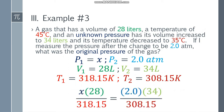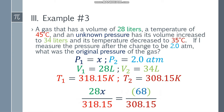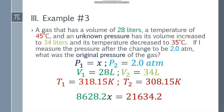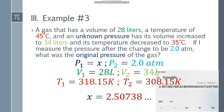Substituting the values: x times 28 over 318.15 equals 2.0 times 34 over 308.15. Simplify the numerator — 28x on the left side and 68 on the right side. Cross multiply: on the left side you have 8,628.2x and on the right side 21,634.2. Dividing both sides by 8,628.2, x equals 2.50738...